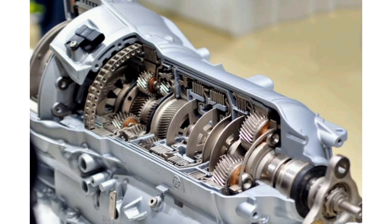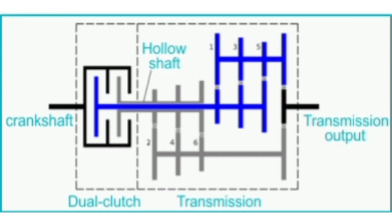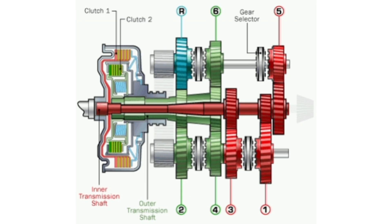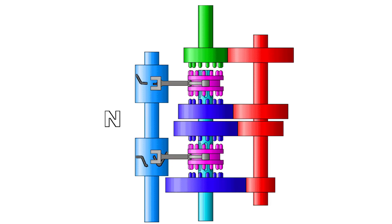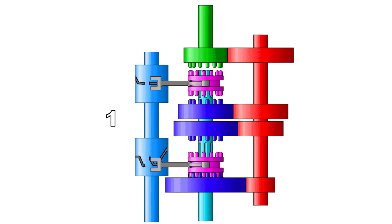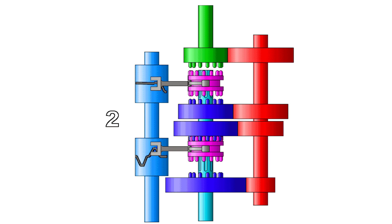Semi-automatic transmission systems offer a blend of manual and automatic control. They provide the option for the driver to shift gears without the need for a clutch pedal manually. Dual Clutch Transmission (DCT) uses two separate clutches for odd and even numbered gears, allowing for rapid and seamless gear changes. Drivers can choose between manual gear selection or automatic mode, making DCTs popular for sports cars and high-performance vehicles.